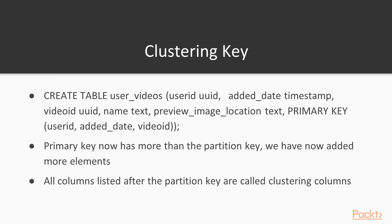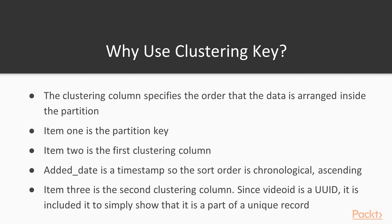The primary key now has more than just the partition key — we have added more elements. All columns listed after the first partition key are called clustering columns. The clustering column specifies the order that data is arranged inside a specific partition. Item one is the partition key; item two is the first clustering column — added_date, a timestamp, so the sort order is chronological ascending. Item three is the second clustering column — video_id, a UUID included to show this is part of a unique record.